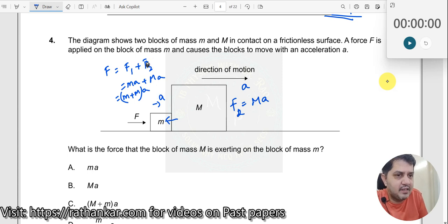So based on this, you can now say F2 is equal to M into A. This is the force acting on the mass M due to m.